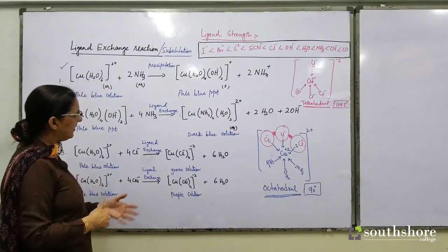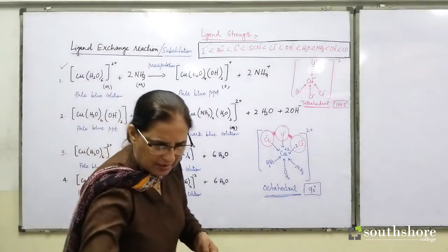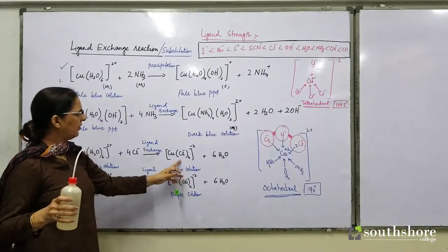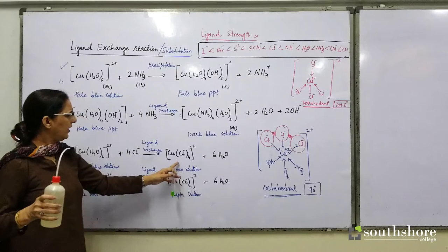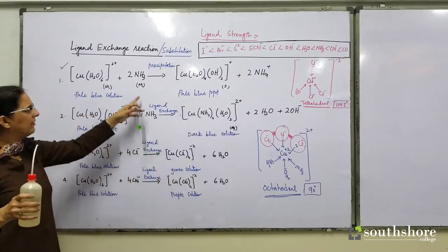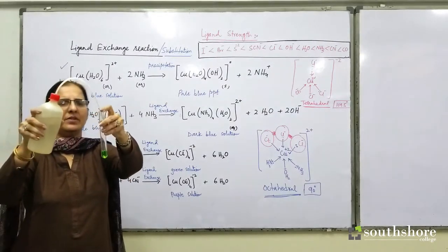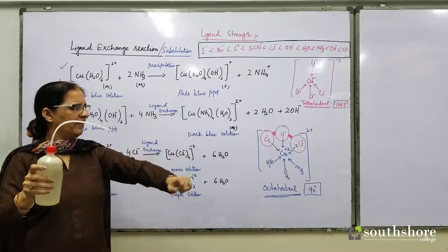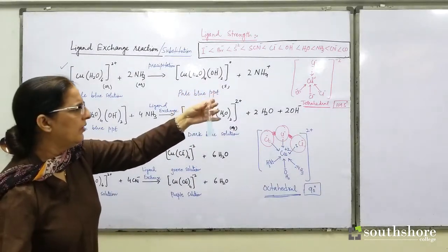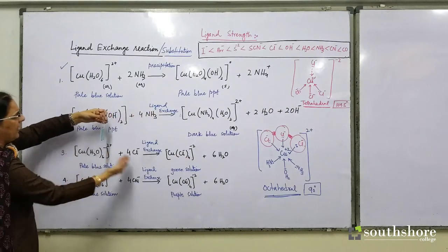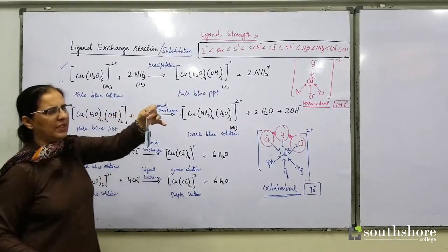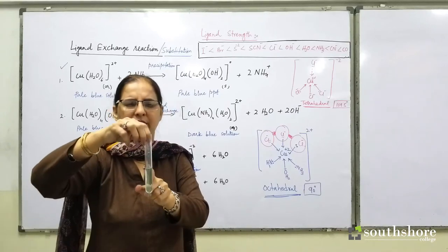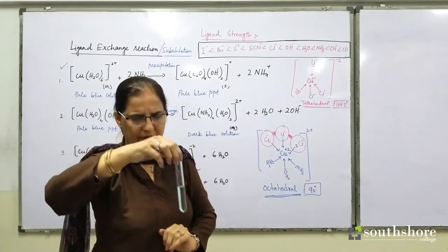We have this tetrachloro complex which is green in color. If I add water to it, all these reactions are actually reversible. So if I am adding distilled water, the color turns pale blue. The ligand exchange has been taking place in the opposite direction. Chloride ions have been exchanged or substituted by water molecules. You can see the blue color, indicating the reaction is reversible.